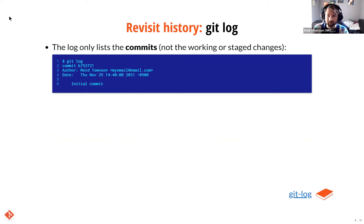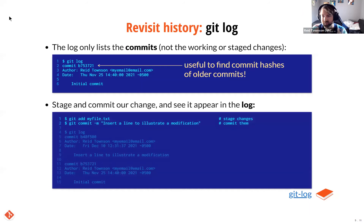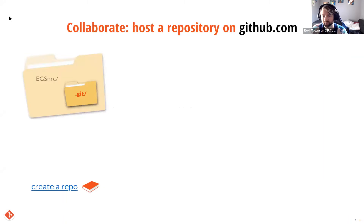You could walk away right here and start using Git for your own projects using only what you've learned so far. But Git is so much more powerful. First, git diff — it lets you inspect changes. This is particularly insightful for text files, where it gives you a line-by-line breakdown. Here I'm adding a line to my file.txt. When I type git diff, it shows that a new line was added with a plus symbol. If lines had been removed, it would show a minus symbol. It's comparing the current status of the directory with the most recent commit.